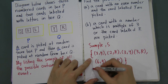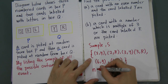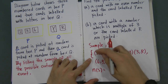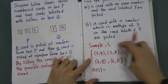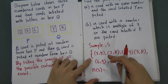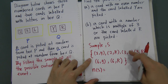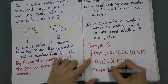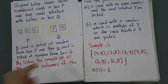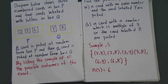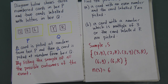Before we start to do the calculation, I want to know how many samples we have here. I count: 1, 2, 3, 4, 5, 6. So the number of sample is 6. This number will be very useful when you want to calculate probability.